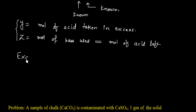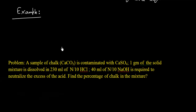Let us take an example of the same idea. The question says: a sample of chalk CaCO3 is contaminated with CaSO4. 1 gram of solid mixture is dissolved in 230 ml of N/10 HCl. 40 ml of N/10 NaOH is required to neutralize the excess acid. Find the percentage of chalk in the mixture.